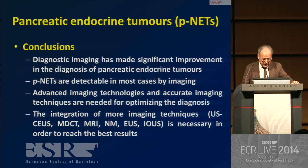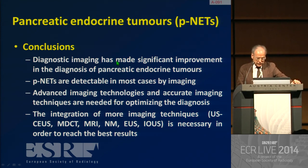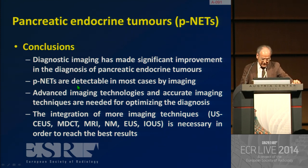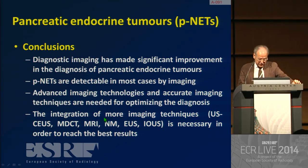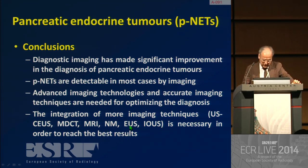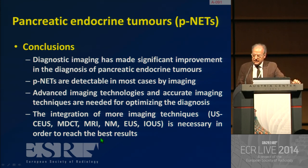To conclude, pancreatic neuroendocrine tumor represents an area in which diagnostic imaging has made significant improvement. Today, this type of tumor is detectable in most cases by imaging. Advanced and accurate imaging techniques are needed for optimizing the diagnosis, and the integration of multiple imaging techniques — ultrasound together with contrast-enhanced ultrasonography, CT or MRI, nuclear medicine, and endoscopic ultrasound — is necessary in order to reach the best results. Thank you for your attention.